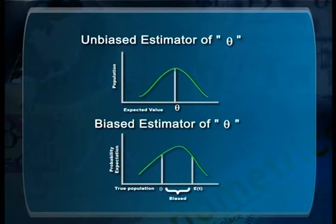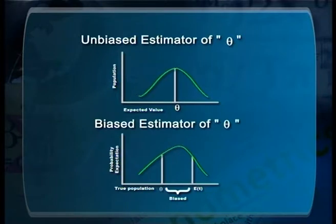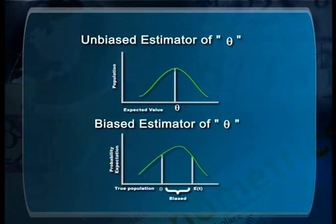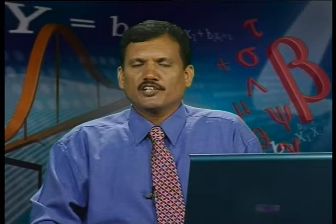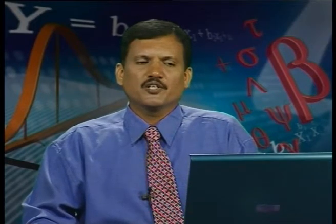For a biased estimator of theta, on the x-axis we take both the actual true population value and the expected sample value. Here, the true population value is on the left side, but our expected value E(t) is on the right side. The gap between the true population parameter theta and E(t) is called bias. For example, if the true population parameter is 15,000 but with sample data we got only 10,000, then the gap between 15,000 and 10,000 is the bias — making it a biased estimator of theta.